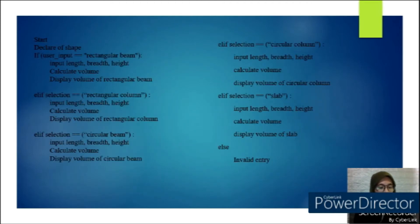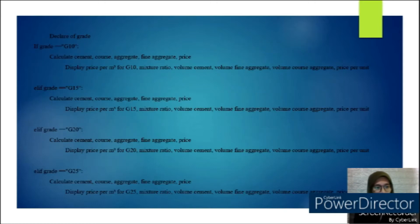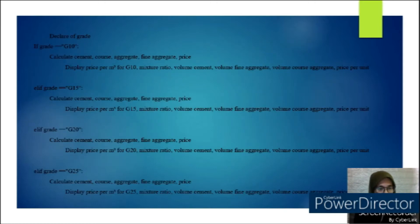For the next selection, rectangular column: input length, width, and height, calculate volume, display volume of rectangular column. Then repeat similarly for circular beam, circular column, and slab. If the input is none of the above, it is an invalid entry.